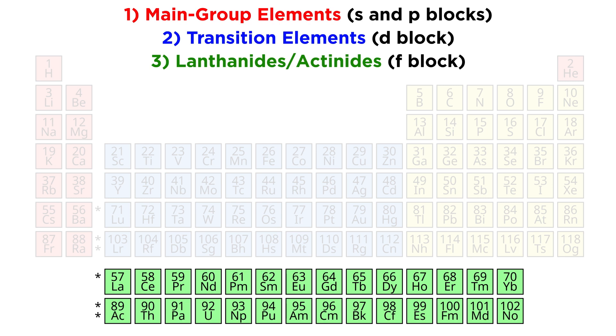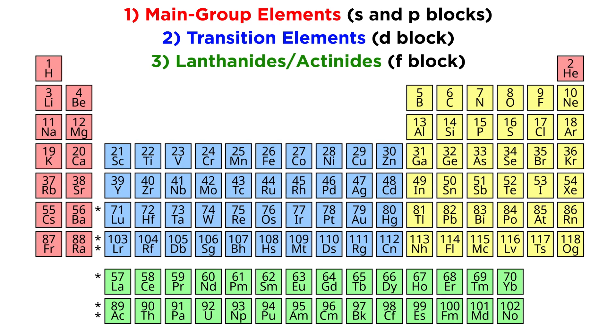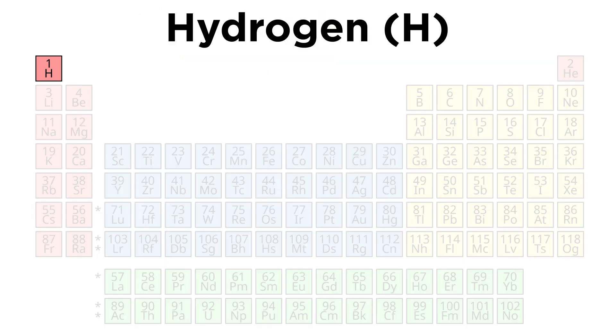Followed by the F block, or the lanthanides and actinides. But before we cover any of these, we are going to start out by discussing one little misfit of an element. We will spend this tutorial talking about hydrogen. Hydrogen will be covered on its own, as it somewhat defies the organization of the periodic table.